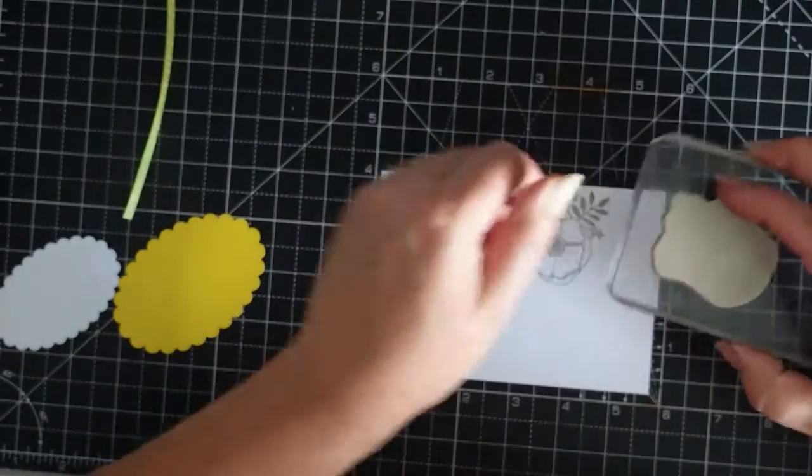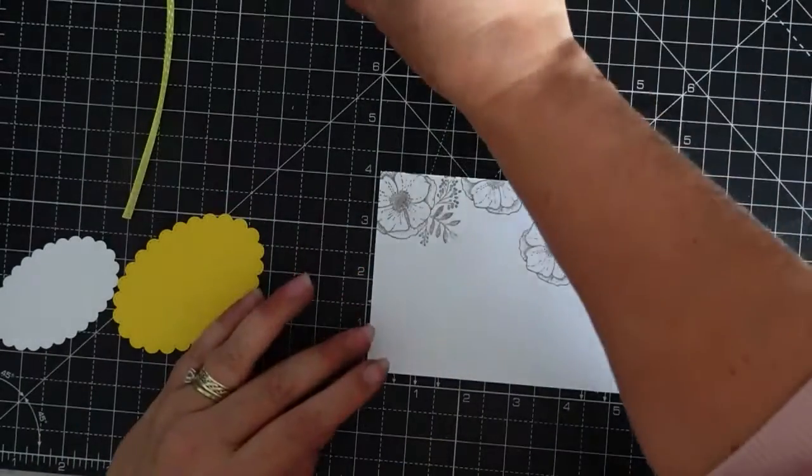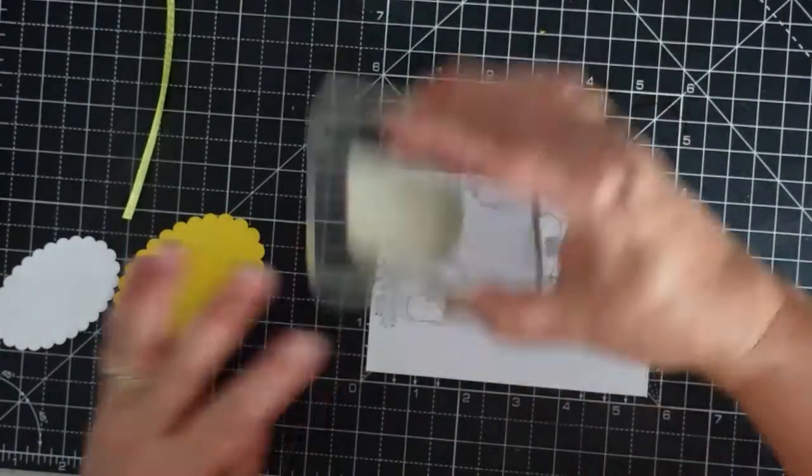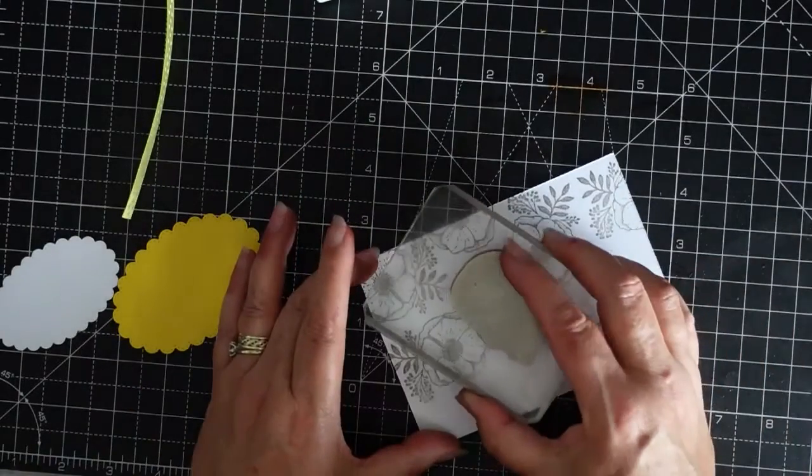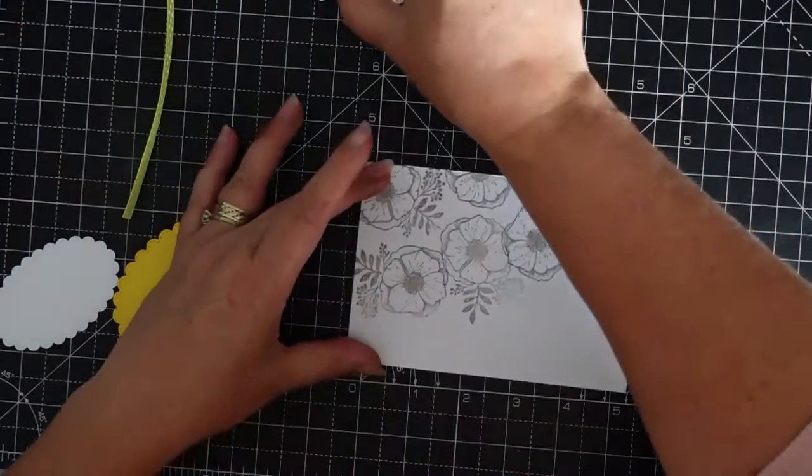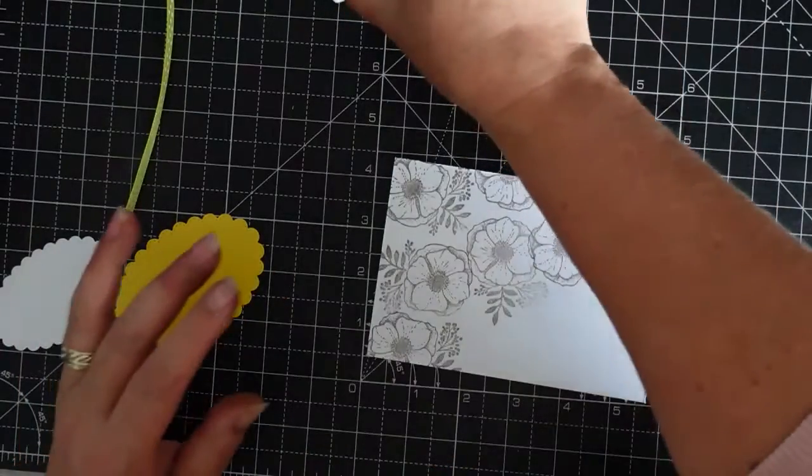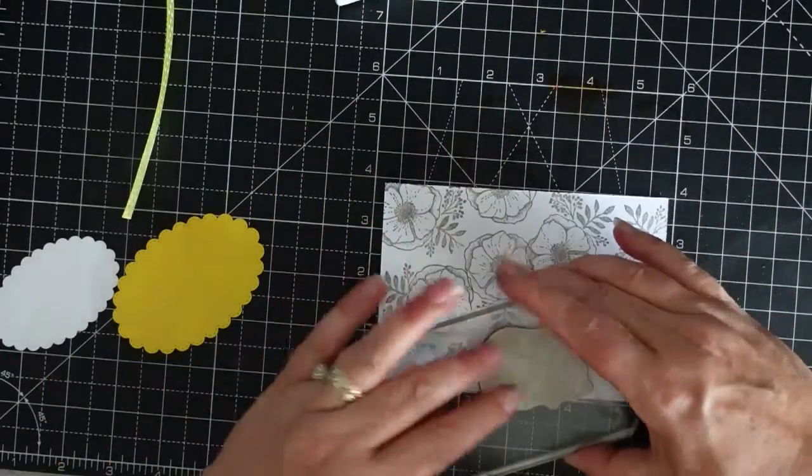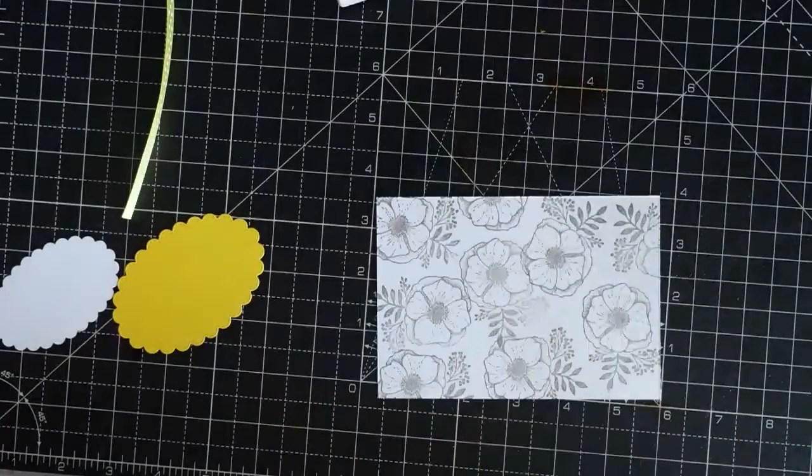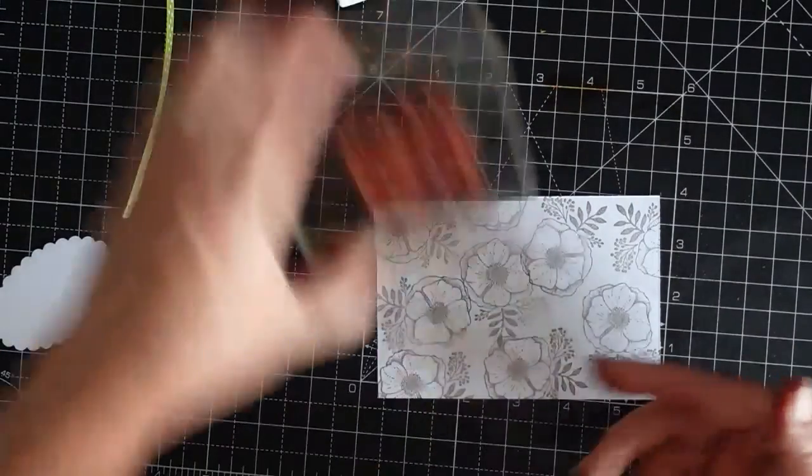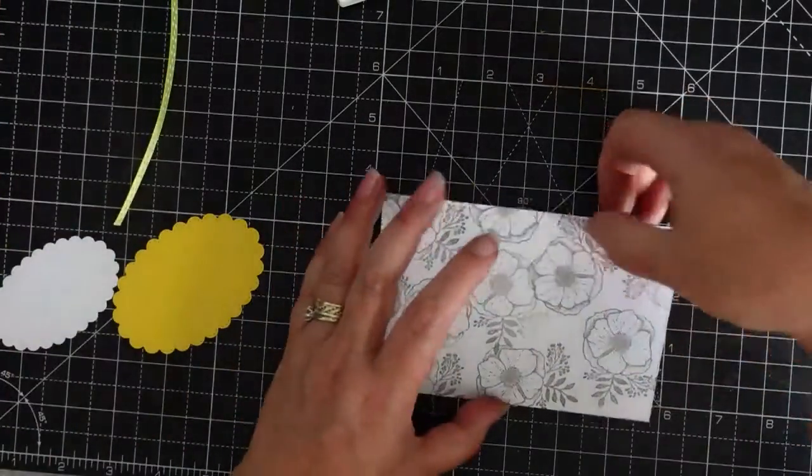So just go all over your card however you want it to go. Doesn't matter if you lap over, it's just a background you're after. Like that, it's just a background, so that is that.